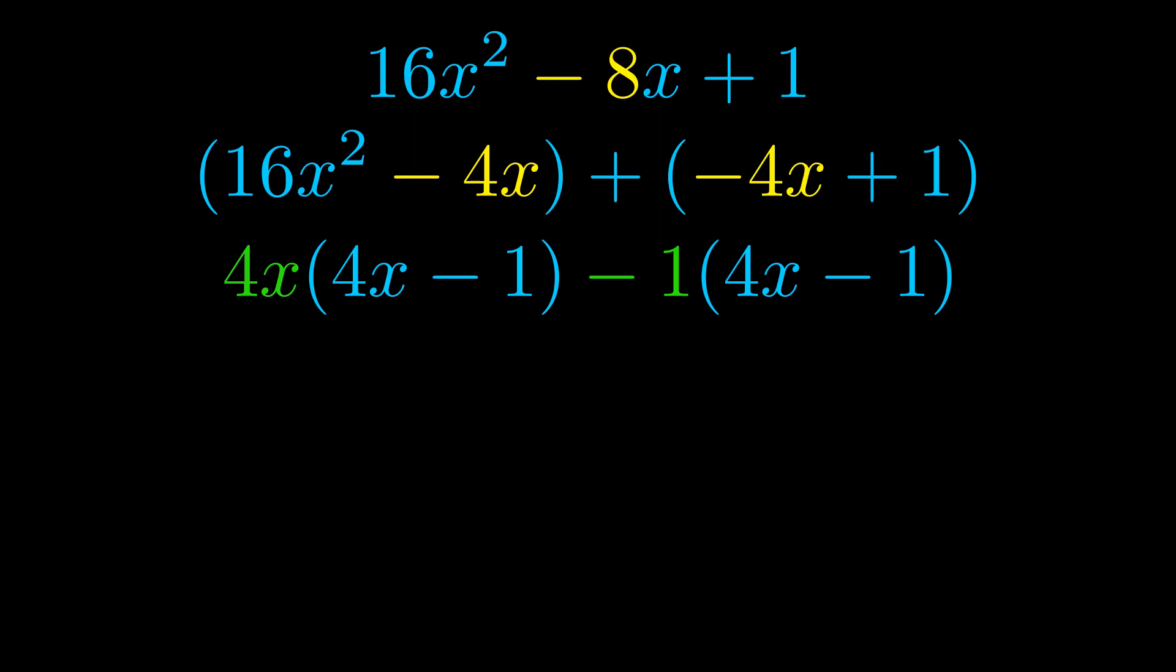Notice also how what remains inside of the parentheses is the same in both cases. The blue values are the same. Those blue values will become one of our factors and we will combine the two green values, the GCFs that we pulled out, to get the other one. And that is our fully factored equation.